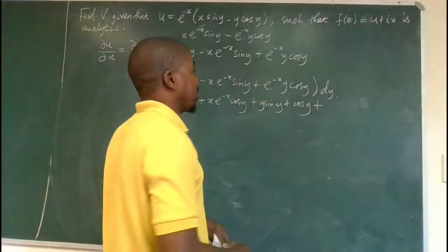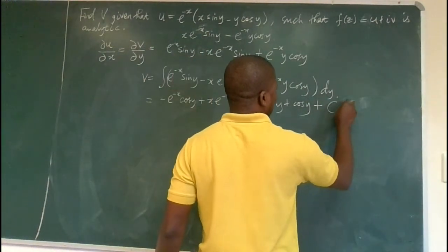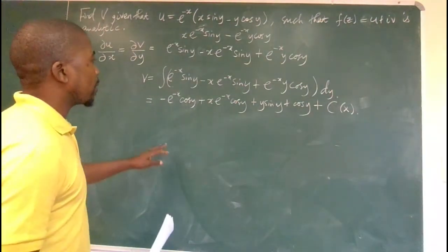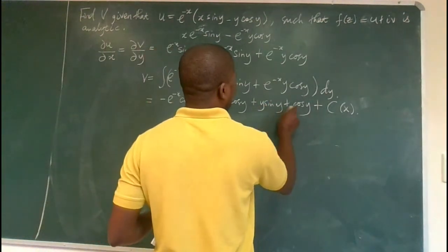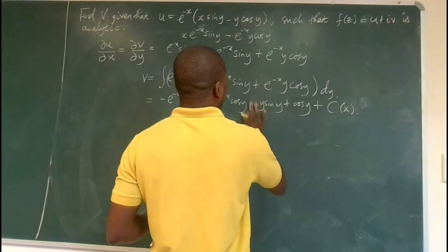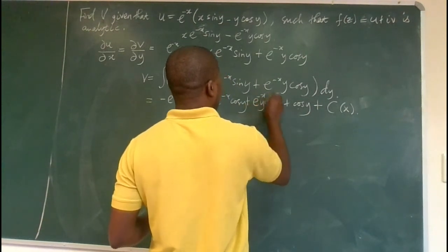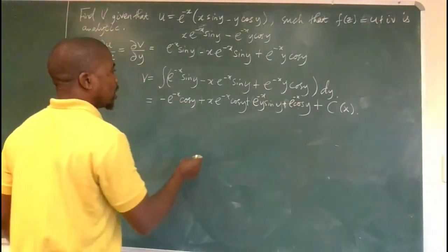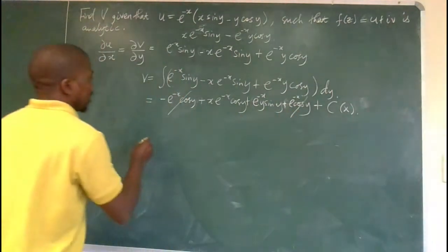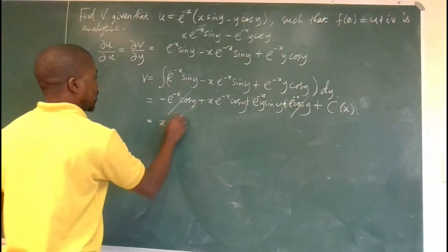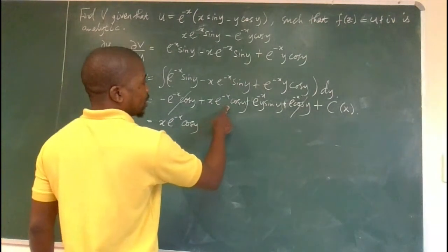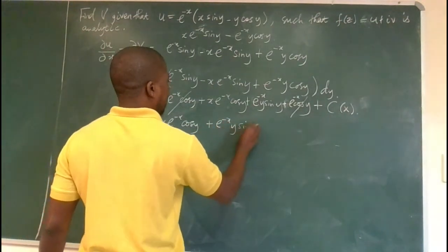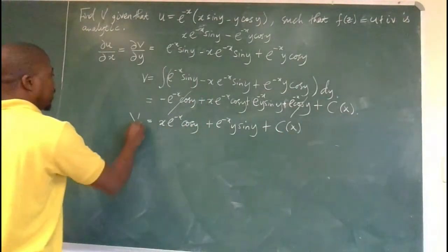So that integral equals y·sin(y) + cos(y) plus a constant of integration, which is a function of x. Multiplying through by e^(-x) — since it was factored out as a constant — we see that the cos(y) terms cancel, and we simplify to v = xe^(-x)cos(y) + e^(-x)y·sin(y) plus a constant.